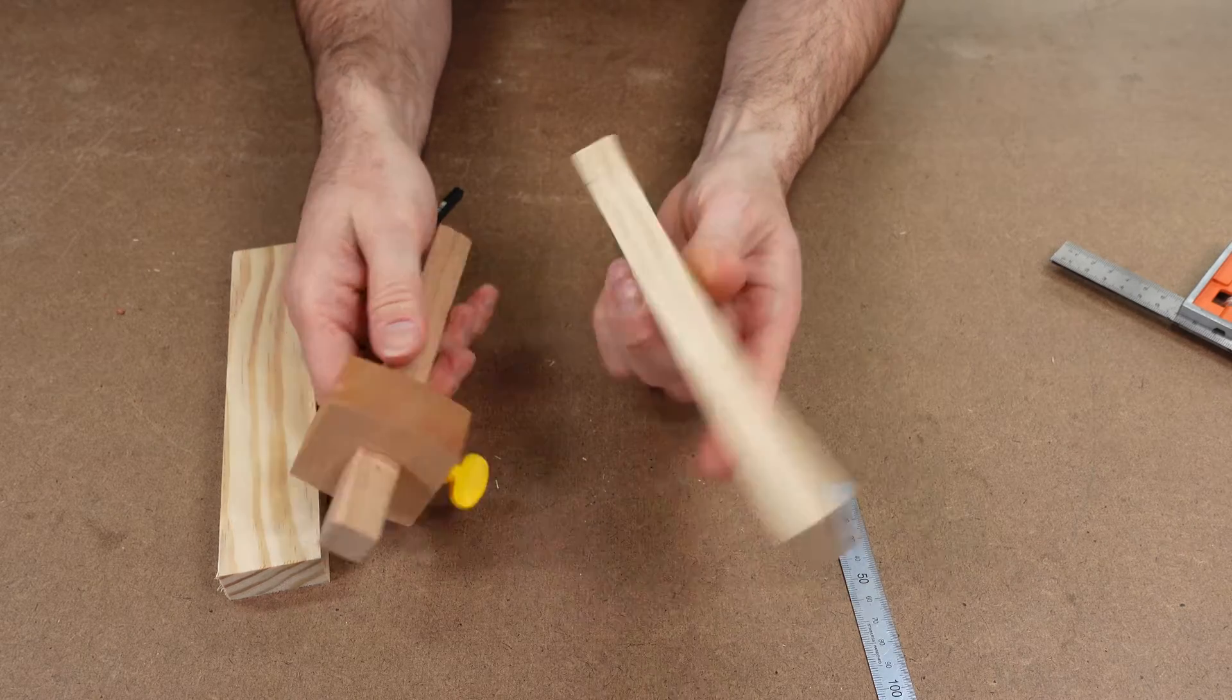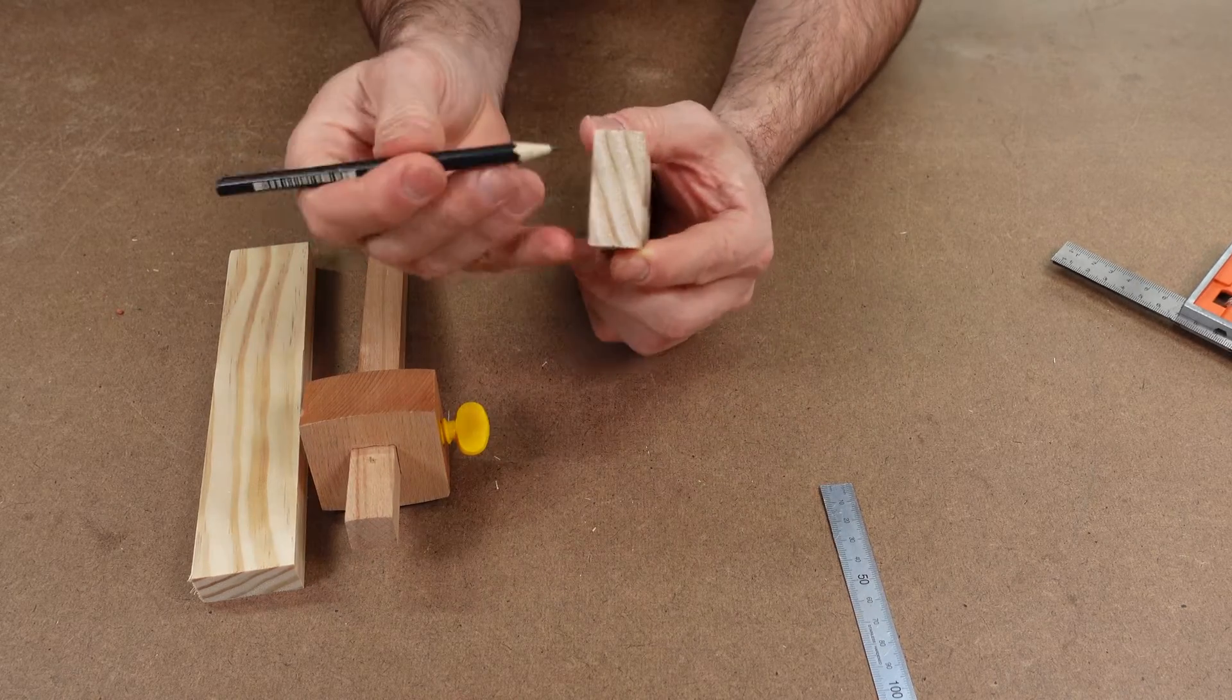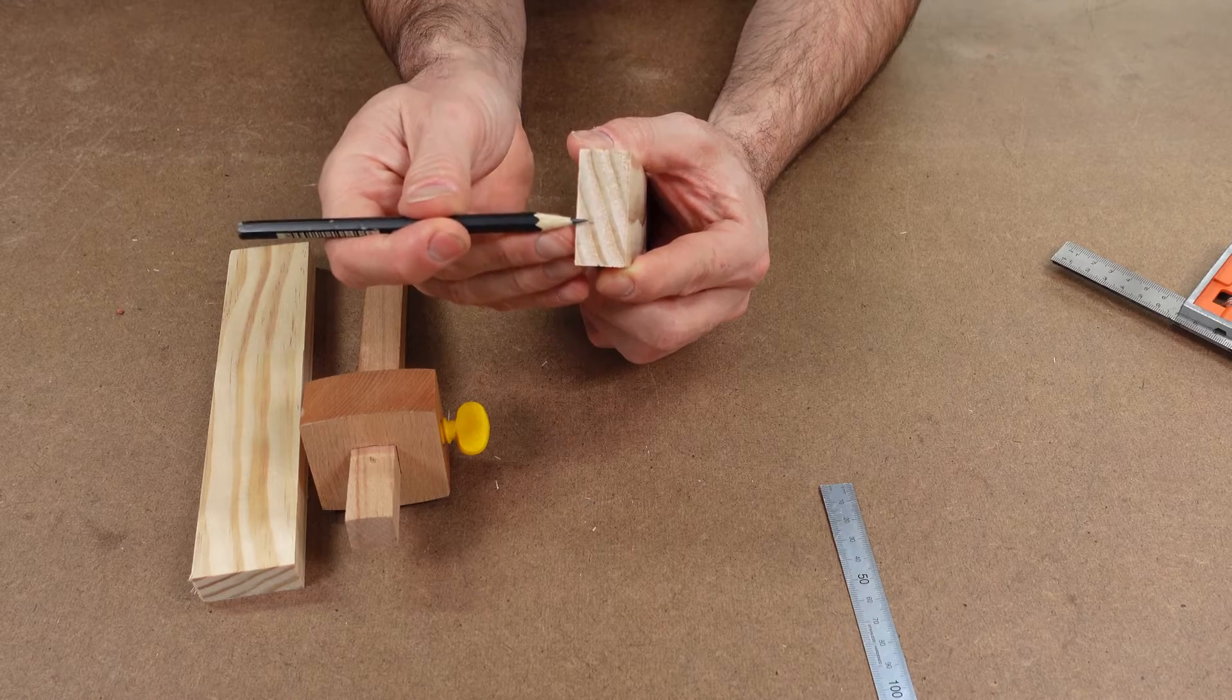Use the marking gauge to scribe a line down the edge, stopping at the pencil line. Then use the marking gauge across the top on the end grain.